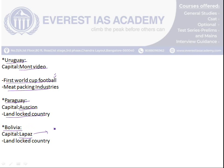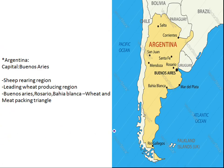The next country is Bolivia, with the capital La Paz. It is another landlocked country in South America. There are two landlocked countries — Paraguay and Bolivia. La Paz is the world's highest capital city, with Quito on the Andes being the second highest.